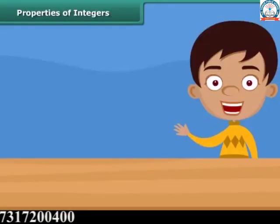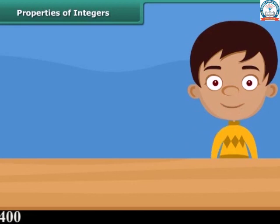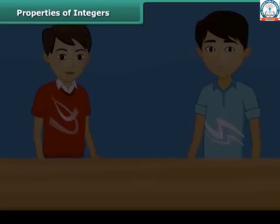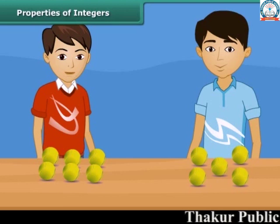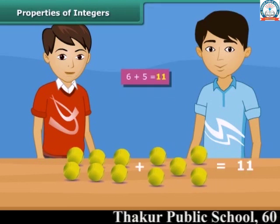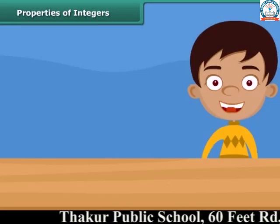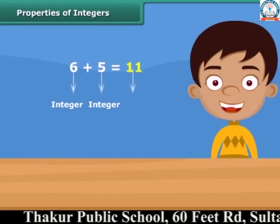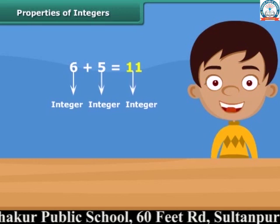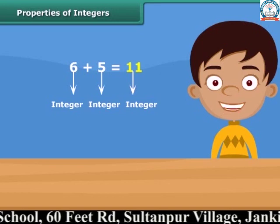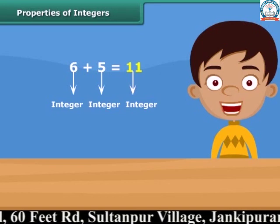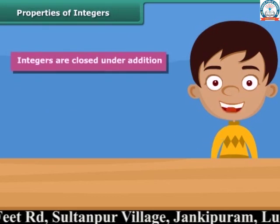What do we get if we add two integers? Rohan has six balls and his friend Sohan has five balls. So how many balls are there in total? Yes, 11 balls in total. From this example we can say that addition of two integers is also an integer. Hence, integers are closed under addition.